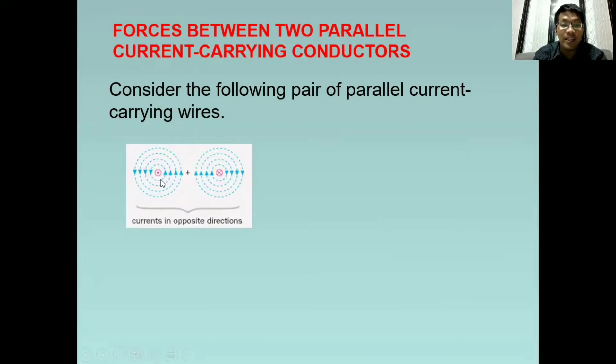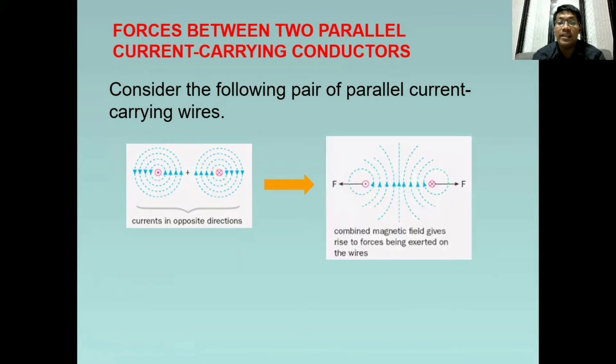we have opposite direction for current. So this one is outward towards you, then the X represents inward or away from you. And the result will be like this: combined magnetic field gives rise to forces being exerted on the